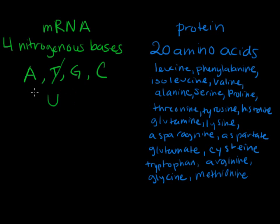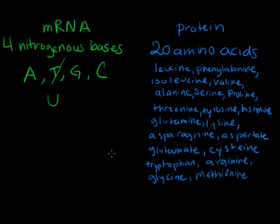Proteins are long chains of amino acids, and remember there are 20 different types of amino acids. So the question is: how do we code for 20 different amino acids if we only have four nitrogenous bases? We don't have enough bases to code for each amino acid individually. And we can't have each base code for five different amino acids, because the ribosome wouldn't know which amino acid it's coding for.